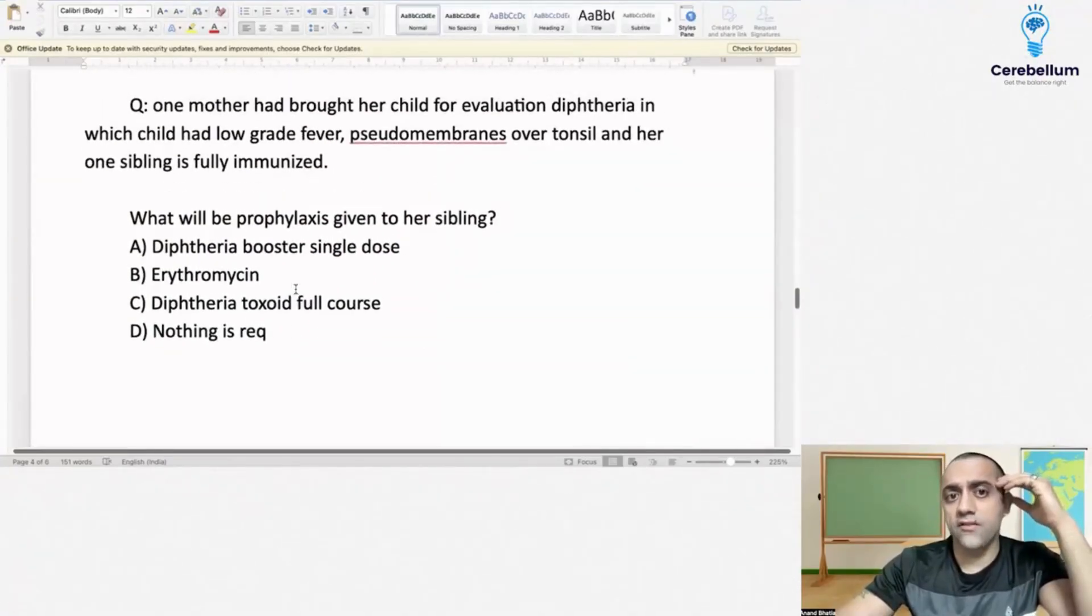Next question we have over here is this one: one mother had brought her child for evaluation for diphtheria, in which child had low-grade fever, pseudomembranes over tonsils, and her one sibling is fully immunized. So what is the prophylaxis given to her sibling?